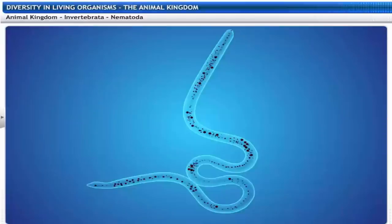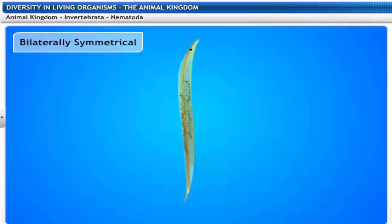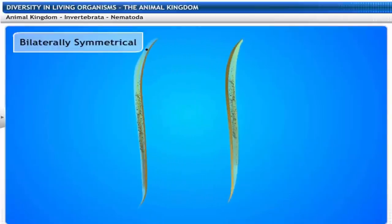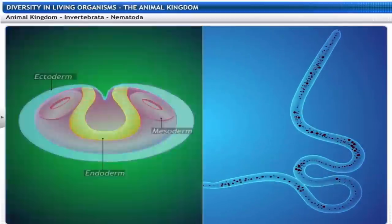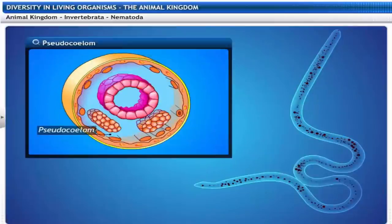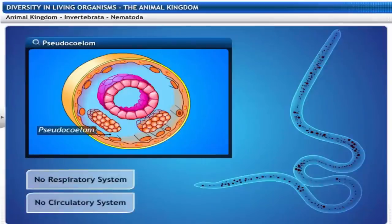Their bodies are long and cylindrical, showing bilateral symmetry. Nematodes are triploblastic and their body cavity is a pseudocoelom. They also lack respiratory and circulatory systems.